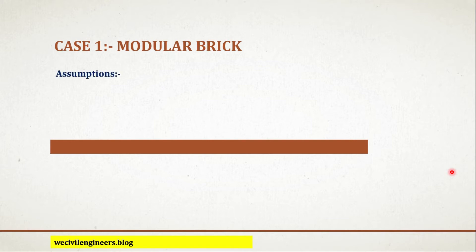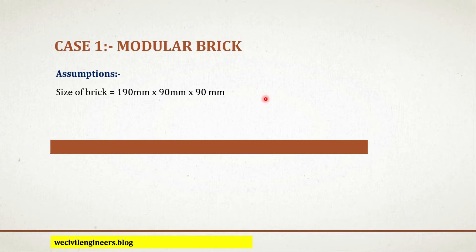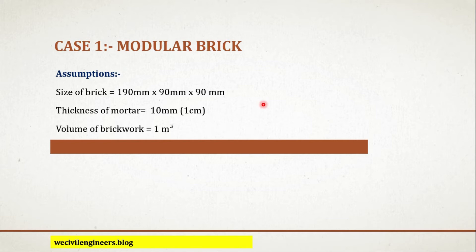Here is the assumption for case 1. Size of brick is 190 mm by 90 mm by 90 mm, which is the standard size of brick in India. Thickness of mortar equals 10 mm, which is equal to 1 centimeter, and the volume of brick work is 1 cubic meter.